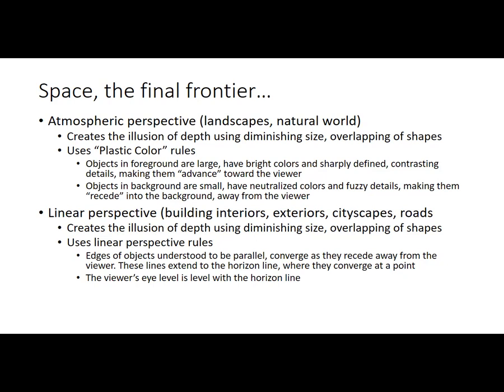Atmospheric perspective uses the plastic color rules: objects in the foreground are large, have bright colors, and are sharply defined with contrasty details - that makes them advance towards the viewer and pop in the foreground. Objects in the background are small, made up of neutralized colors with fuzzy details, and that makes them recede into the background. That push and pull of foreground and background objects is what opens up our sense of three-dimensional space in atmospheric perspective.